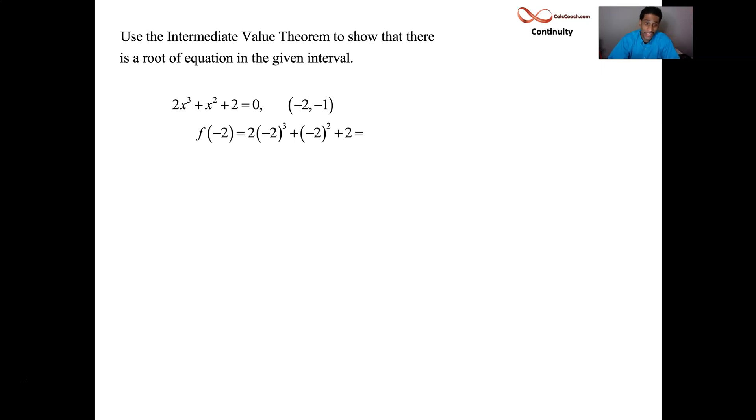So let's plug negative 2 in. Cubic, you get a negative 8. You get a negative 16, plus a 4, plus a 2. And you end up with a negative 10. Put negative 1 in. Cubic, you get a negative 1, times 2, negative 2, plus 1, plus 2. So you end up with a 1. When you plug in negative 2, you're getting a negative 10. When you plug in negative 1, you're getting a 1.